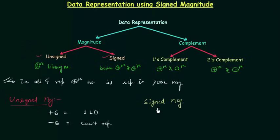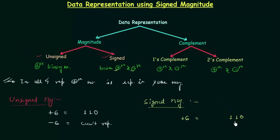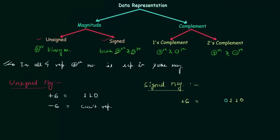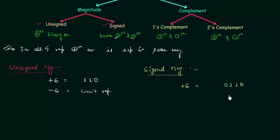In case of signed magnitude we can definitely represent positive and negative binary numbers. If I want to represent positive 6, I will first represent the magnitude, which is 1 1 0. Then I add one extra bit — this extra bit is called the sign bit. If the sign bit is 0 the number is positive, and if the sign bit is 1 the number is negative.